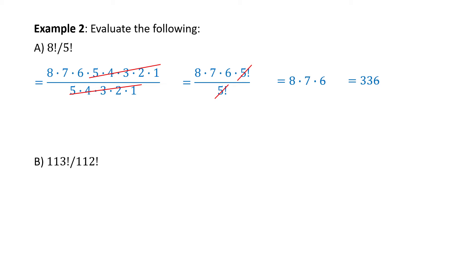Using that nifty trick, let's do Part B: 113 factorial divided by 112 factorial. You may have noticed that if you tried this on your calculator, it's a data error — it's too big. But we can do this manually. Write the numerator as 113 × 112!, divided by 112!. The 112! in the numerator cancels the 112! in the denominator, and our answer is just 113.